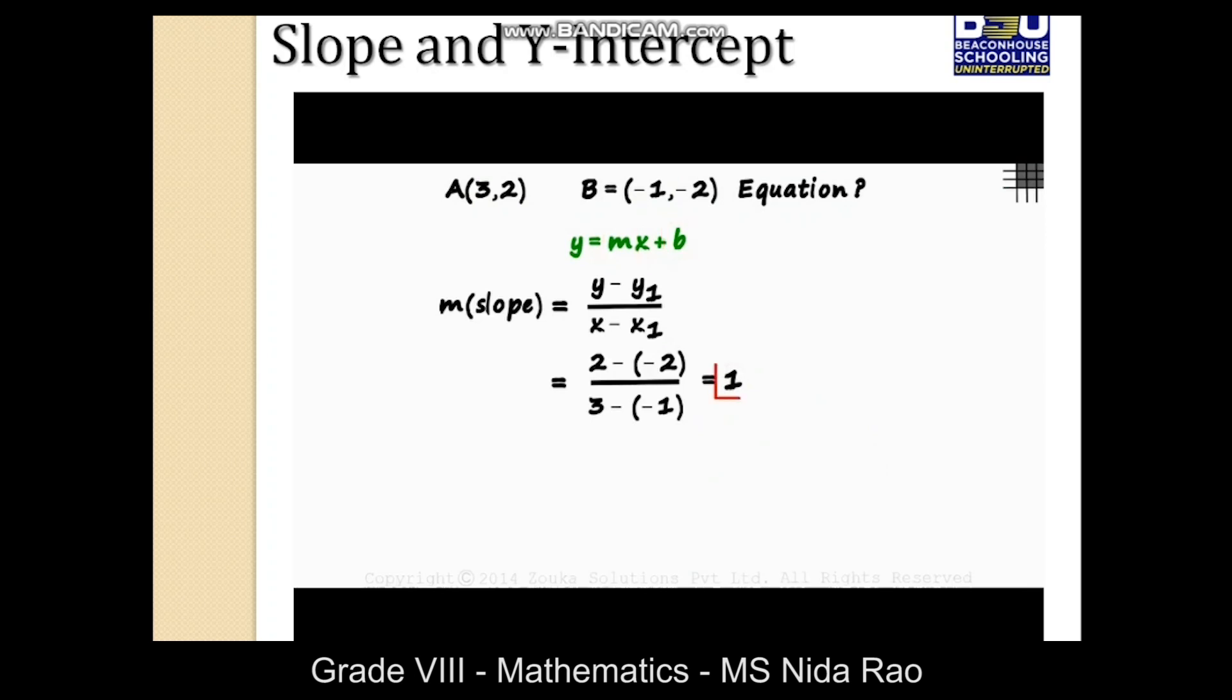We have m and we need to find b. It's easy. If the slope is 1, this can be written as y equals x plus b. To get b, just substitute one of these values here. As both points lie on the line, if we substitute 3 in place of x and 2 in place of y, we get 2 equals 3 plus b. The value of b is minus 1. Y equals x minus 1 is the equation of the line that passes through A and B.